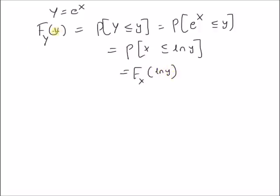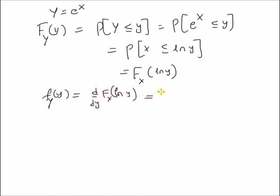Therefore, the CDF of y is equal to the CDF of x at x equal to log y. From this, we can easily derive the PDF of the random variable y, defined as f_y(y) is equal to the derivative d/dy of F_x(log y), which is equal to 1/y times f_x(log y), that is the PDF of x evaluated at log y.